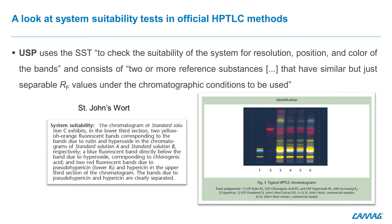In the monograph, the system suitability is checked on the standard solution C, which is their reference extract. They look at the lower third section, where two yellowish-orange fluorescent bands corresponding to rutine and hyperoside are identified. Then, in the upper third section of the chromatogram, two red fluorescent bands due to pseudo-hypericine and hypericine are clearly separated.